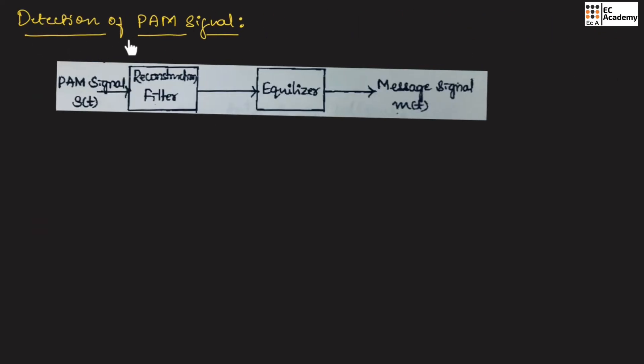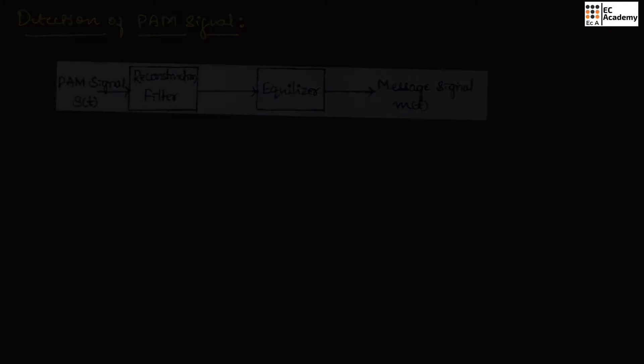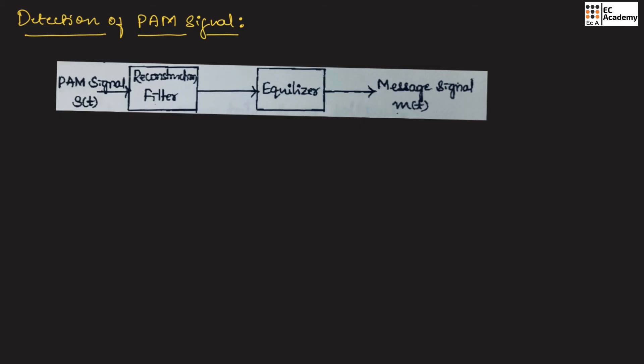Now let us see detection of PAM signal. The PAM signal is passed through the reconstruction filter as well as an equalizer to obtain the original message signal. This is how we can obtain the original message signal from a PAM signal. This is about pulse amplitude modulation. Hope you have understood the topic. Thank you.